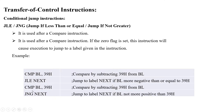Another example: compare BL, 39H — again comparing BL value with 39H. Using jump if not greater: suppose BL value is not greater than 39H, then go to next.